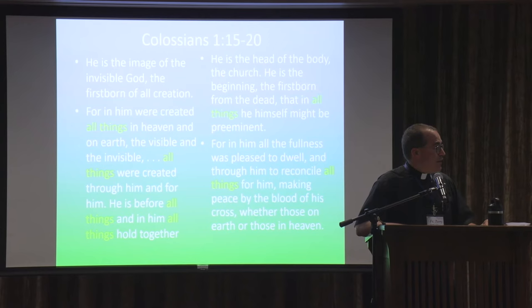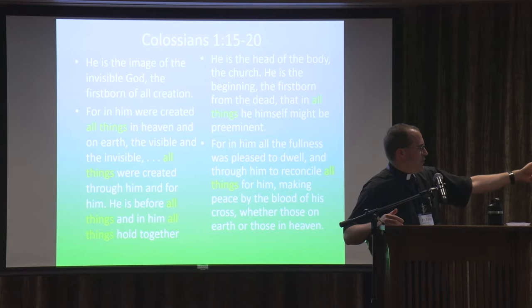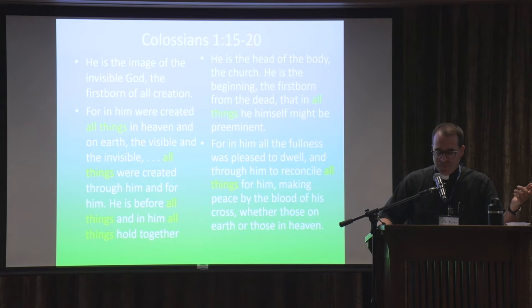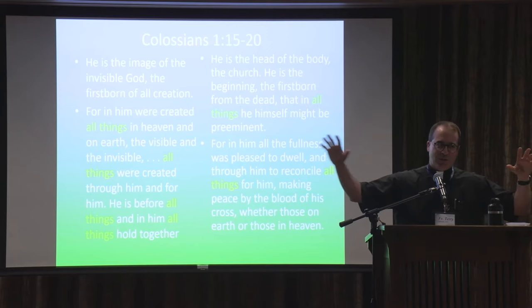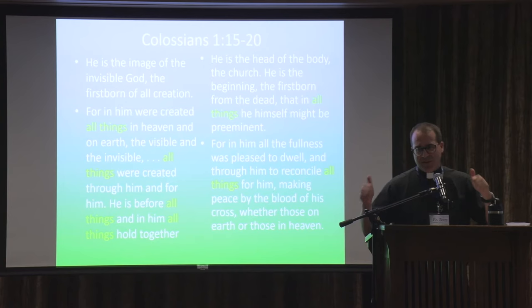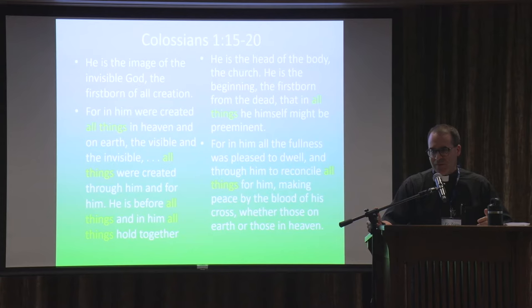In the letter to the Colossians 1:15-20, on the left-hand side is everything dealing with creation — all things are created in and through the Logos, mentioned four or five times. On the right-hand side is redemption — all things are reconciled in and through Jesus Christ. It's Jesus Christ who is both the Creator Logos and the Redeemer. Creation and redemption go together; they're not meant to be separated. In God's divine economy, his plan of salvation, creation and redemption have always gone together. It's only in the last five centuries that we've separated them from one another.